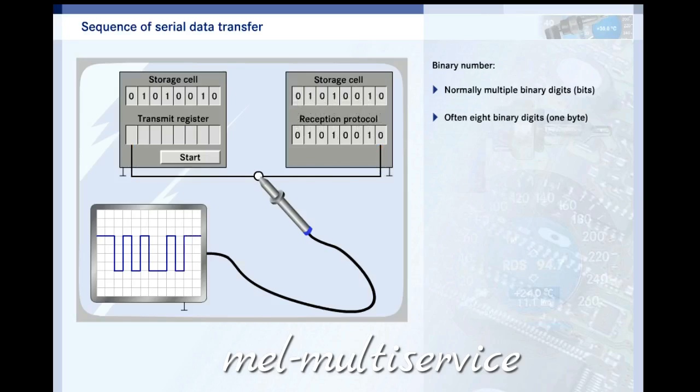As you saw, during serial data transfer, all the bits in a binary number are transferred in succession on a single wire. In this example, a low signal stands for 0 and a high signal for 1.